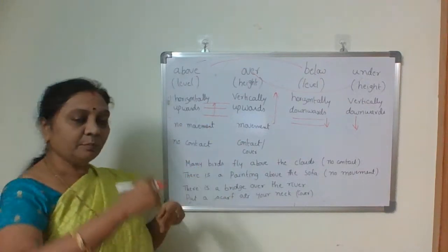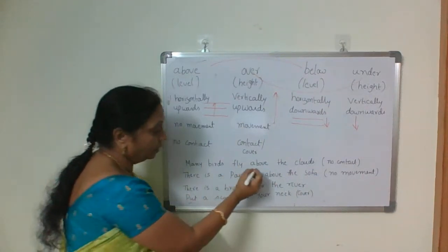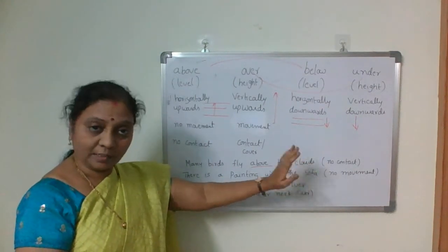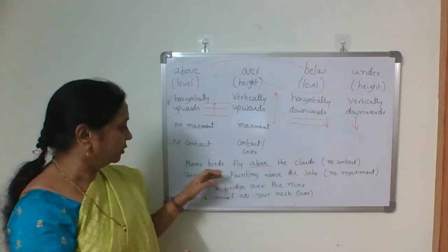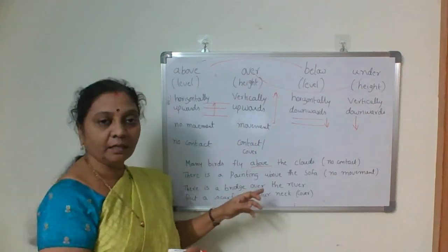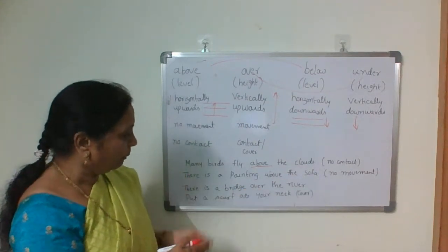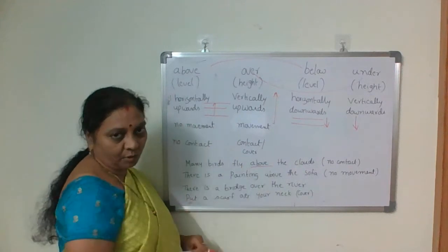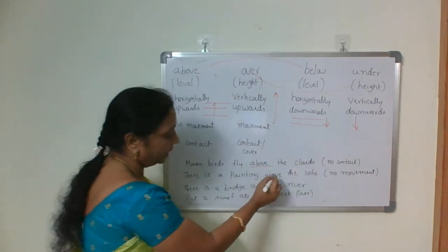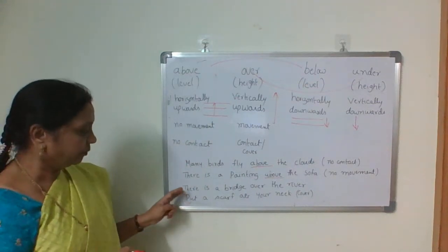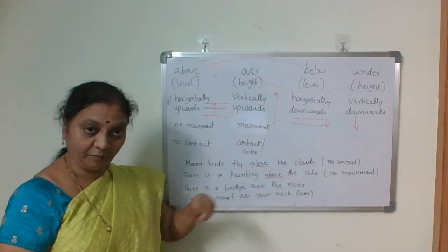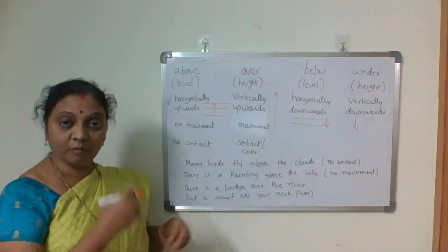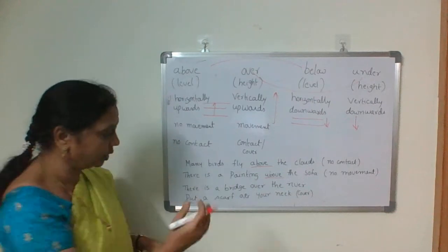Look at these examples: 'Many birds fly above the clouds' — no contact, no movement, so we use 'above'. 'There is a painting above the sofa' — no movement, no contact, so 'above'. 'There is a bridge over the river' — always use 'over the river'; you should not say 'above the river'. 'Put a scarf over your neck' — you want to cover something, so use 'over'.